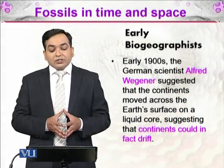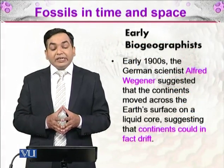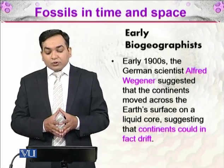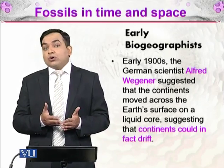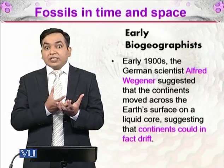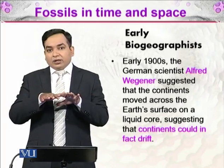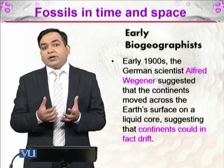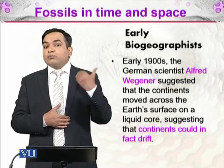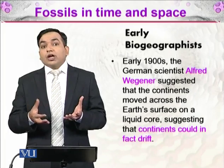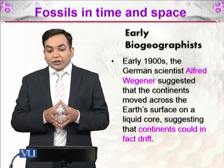Early biogeographers such as the German scientist Alfred Wegener suggested that continents move across the Earth's surface on a liquid core, suggesting that continents could in fact drift — giving the idea of continental drift. The Earth is a globe with magma inside, and on the surface of the magma, the continents are drifting at a very slow speed, though in geological time that speed is significant. They can ultimately collide with each other, forming mountains where they collide, and creating oceans where they fall apart.